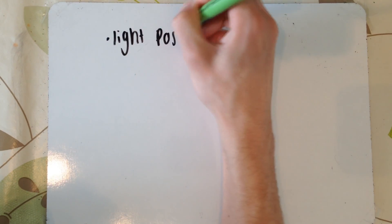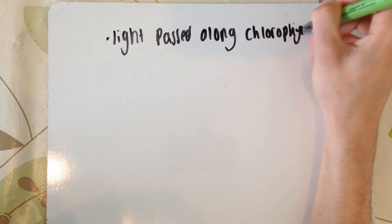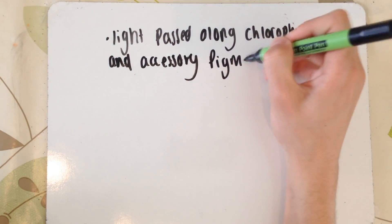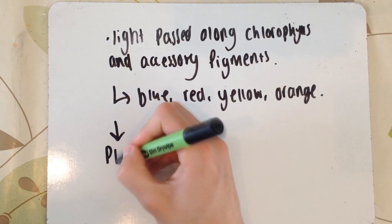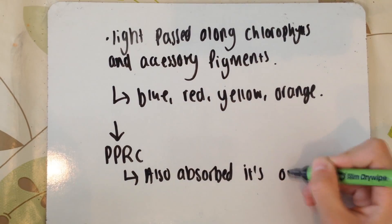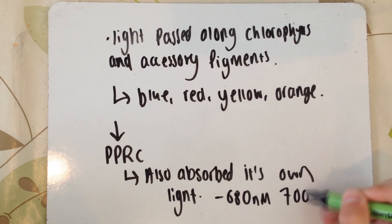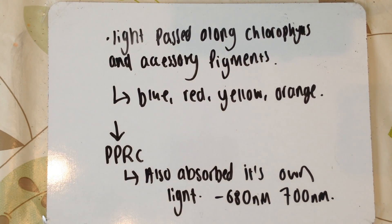If you're with me still, the light has hit all the pigments and they've been passed along to the primary pigment reaction center. But don't forget, the primary pigment reaction center also absorbs its own light. It doesn't just sit at the bottom and wait for the energy from the others. It also absorbs its own light between P680 and P700.